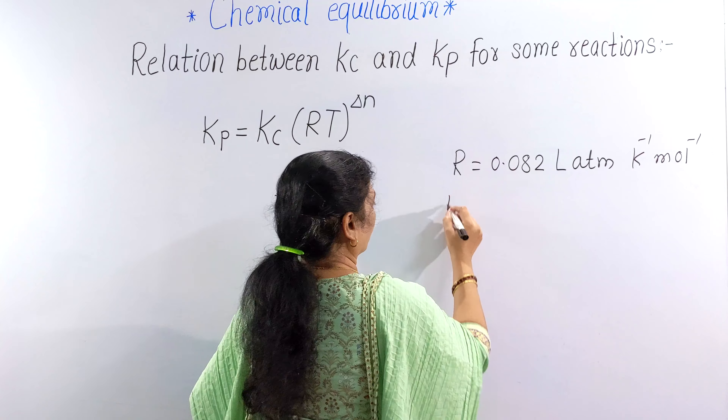So delta N is equal to 2 minus 4, which equals minus 2. Therefore, for this reaction, Kp is equal to Kc into RT raised to minus 2.